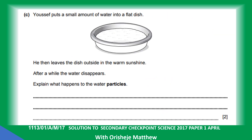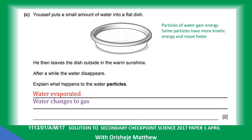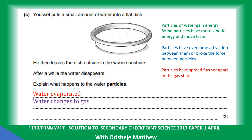Joseph puts a small amount of water in a flat dish and leaves it outside in the warm sunshine. After a while, the water disappears. Explain what happened: the water evaporated — water changed to gas. Particles of water gained energy; some particles had more kinetic energy and moved faster. The particles overcame the attraction between them, breaking the forces between particles in the liquid, and spread further apart in the gas state.